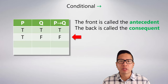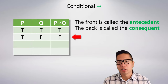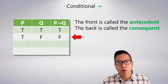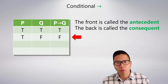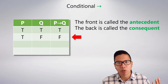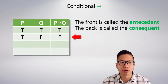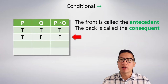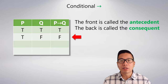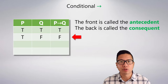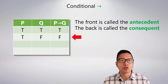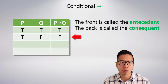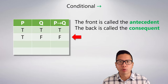The first two rows of the conditional truth table are pretty straightforward. When P and Q are both true, the conditional is true — if it rains and whenever it rains the sidewalk is indeed wet, that conditional is true. The second row should also be obvious: if it rains but the sidewalk is not wet, the consequent is false, so the conditional is false as well.